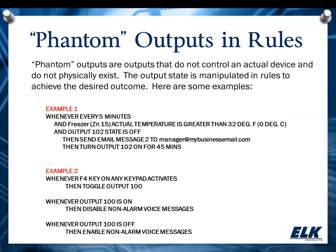Now let's talk about what we refer to as a phantom output. A phantom output is an output that doesn't physically exist — it doesn't actually control any physical piece of hardware. We manipulate its state using rules to achieve things we want to happen. The system keeps track of the state of all outputs whether they exist or not, and you can have up to 208 outputs on the system. I showed you one earlier with the garage door where we used output 100 as a five-minute timer — that's one example.